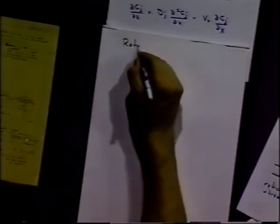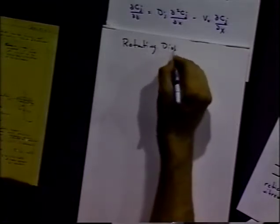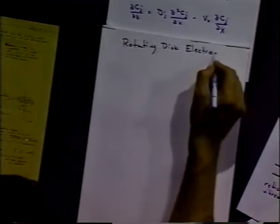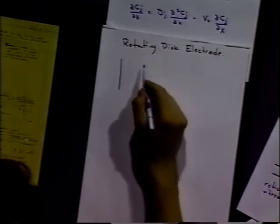This is the method of the rotating disc electrode. We've already mentioned it. Typically, let's just schematically indicate what one actually looks like.